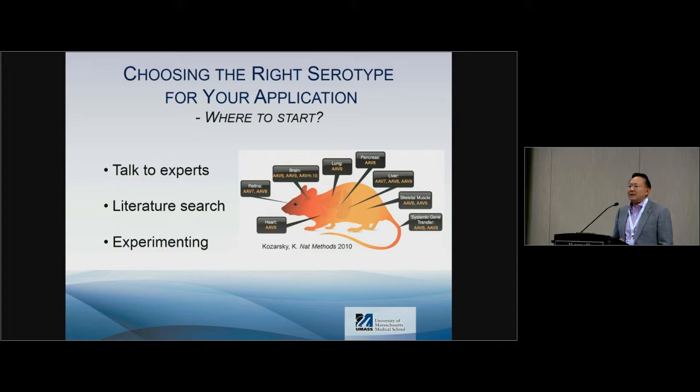Second, do a little research. Look at the review paper in Nature Methods by Karen Kozlowski, which clearly describes second-generation primate AAVs and their tropism in different tissues. Of course, more importantly, you have to do some experiments yourself.